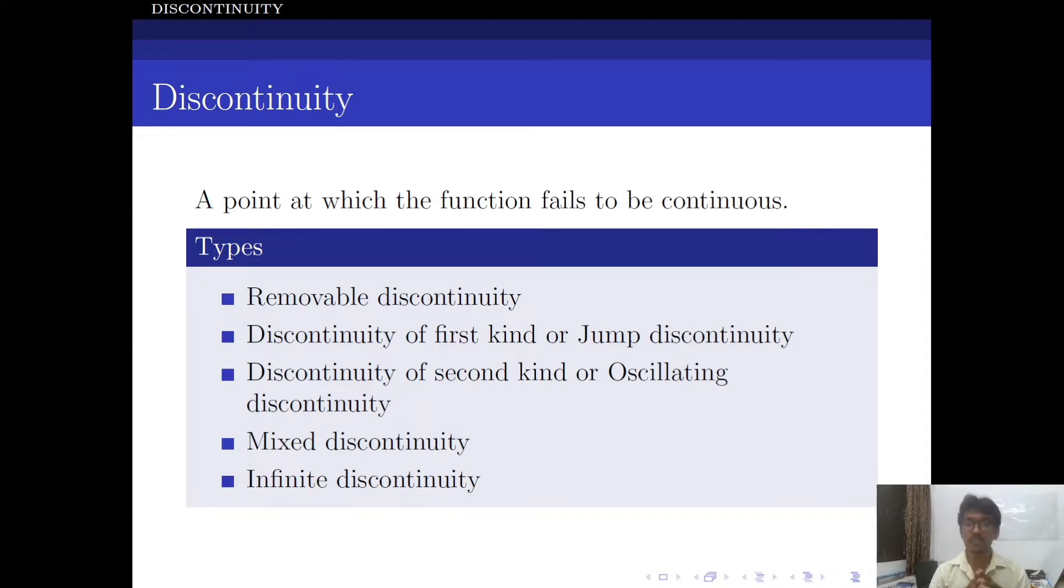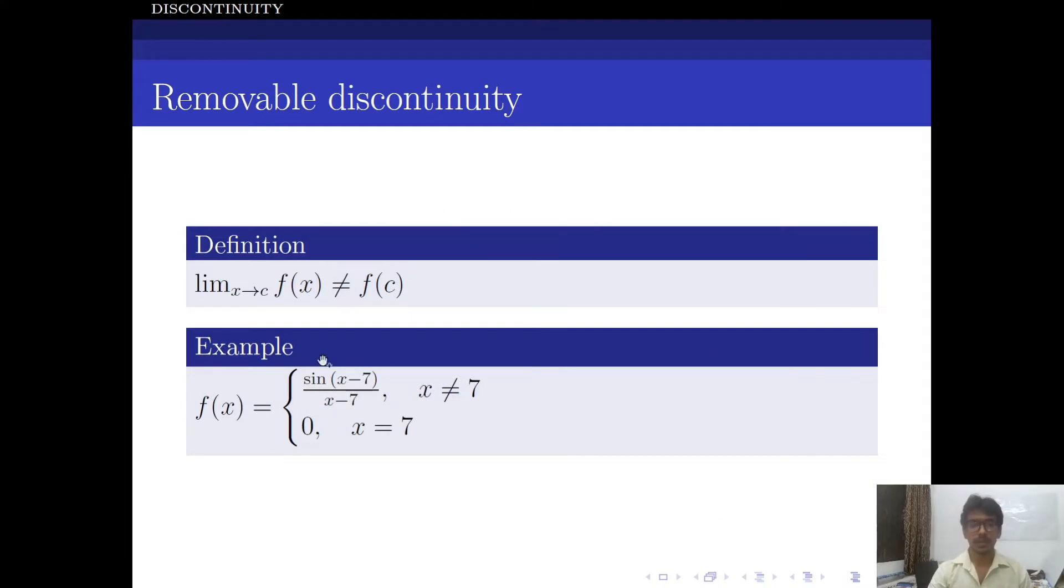If the function fails to be continuous at that point, we say the function has a discontinuity at that point. The discontinuities can be classified under five categories. We will explore them one by one. Here that expression is not satisfied, which means these two values may be different and that is when we have the removable discontinuity.